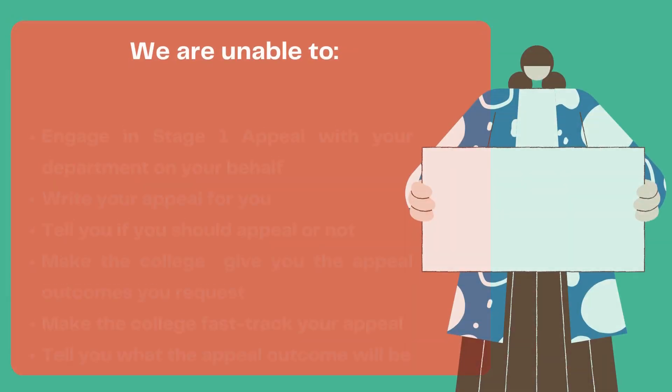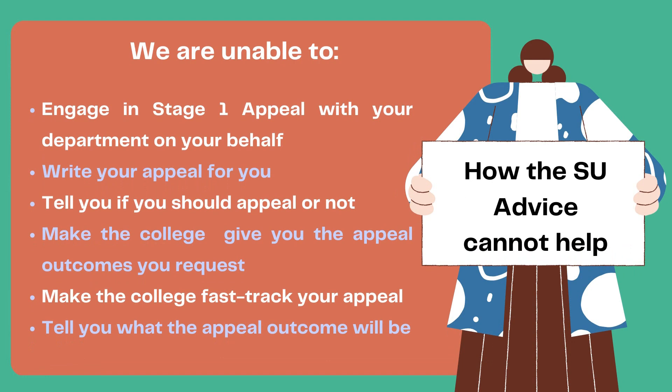It is important to remember that there are some things we are unable to help you with, including engaging in a Stage 1 appeal with your department on your behalf, writing your appeal for you, telling you if you should appeal or not — as this is your personal decision — making the college give you the appeal outcomes you request, making the college fast-track your appeal, and telling you what your appeal outcome will be.